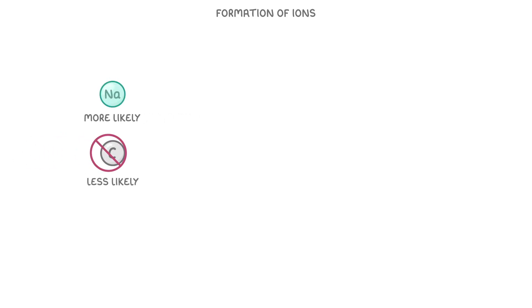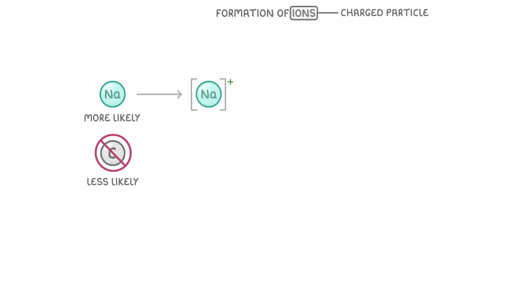In today's video, we're going to explore how ions are made, and why some atoms are more likely to form ions than others. An ion is just a charged particle, so it could be a single atom, like Na+, or a group of atoms, such as a hydroxide ion, which is OH-.